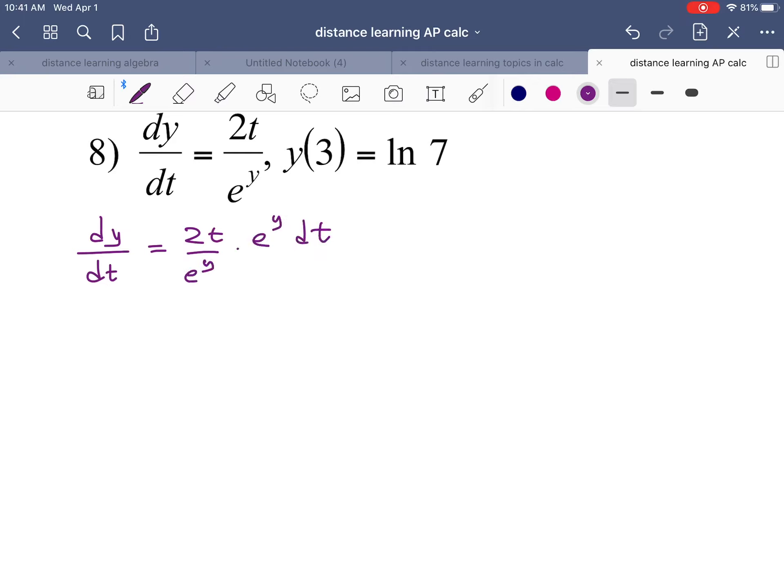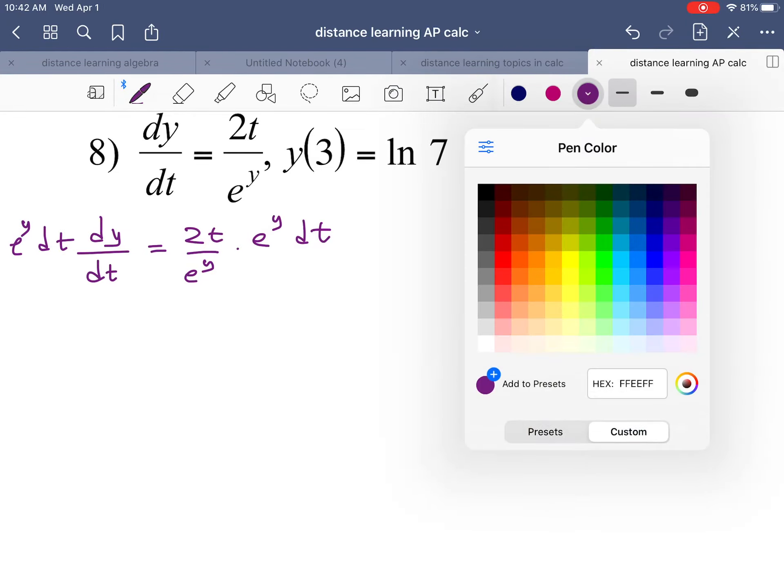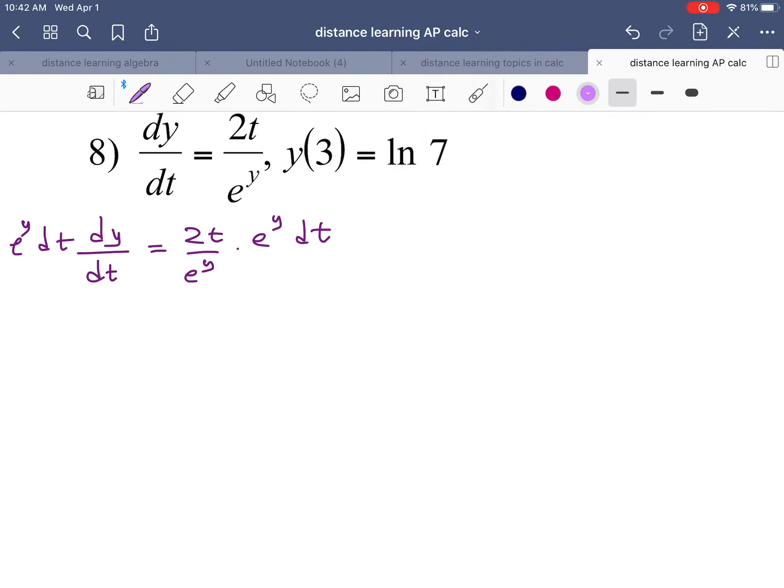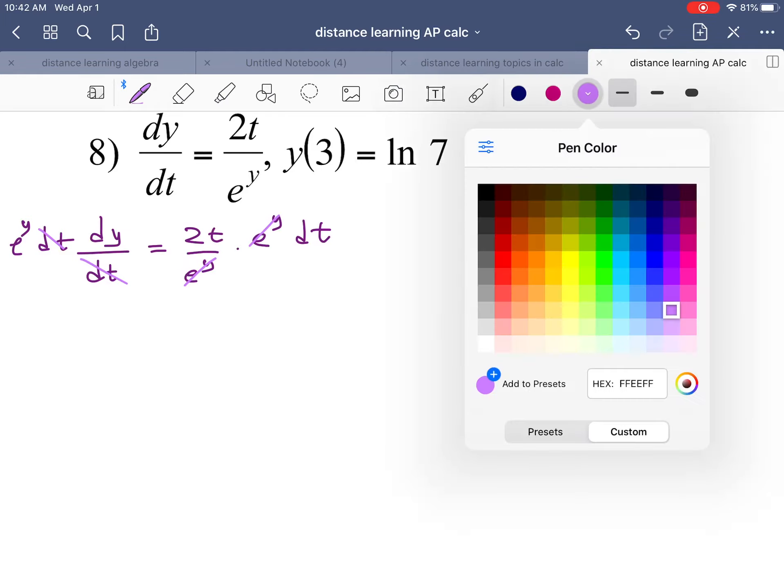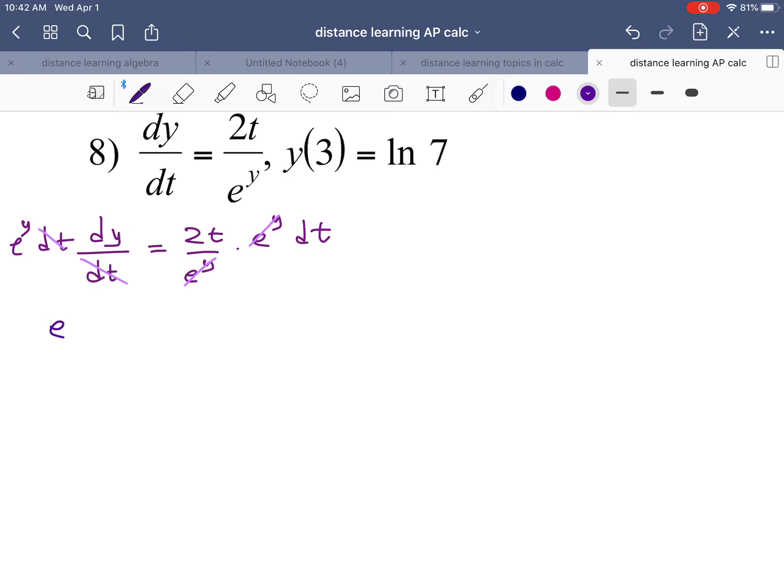And I'm going to multiply by e to the y dt and multiply by e to the y dt. The reason being is I'm going to cancel the dt's over here, I'm going to cancel the y's over here, and the result is e to the y dy and 2t dt.